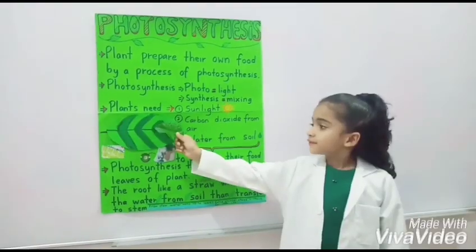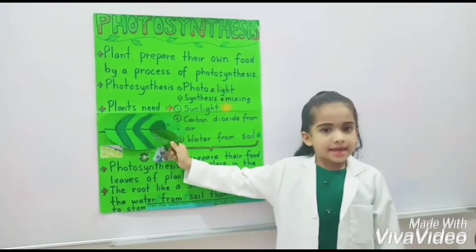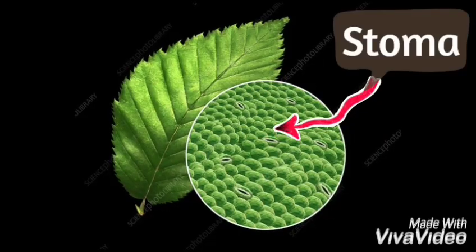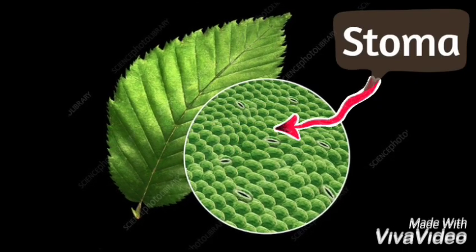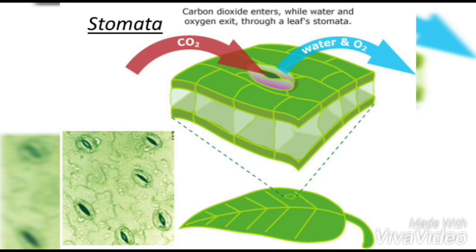Leaves have tiny pores called stomata, through which carbon dioxide enters the plant. Plant cells contain a tiny structure called chloroplast, which contains chlorophyll.